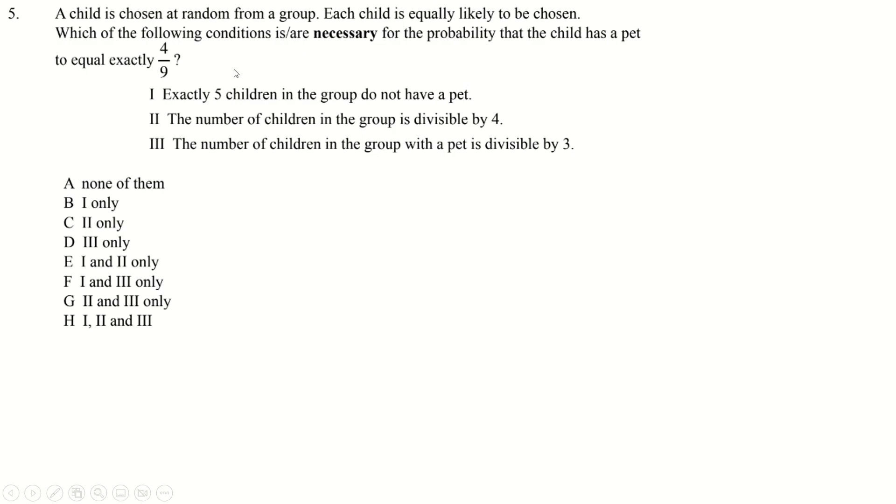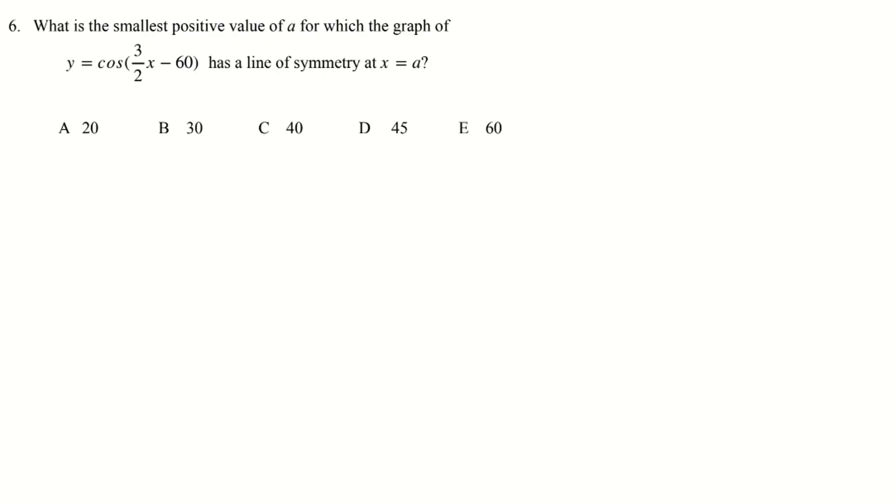Question five. Which of these are necessary for the probability of having a pet to be four ninths? Five children do not have a pet. Well, this could have been simplified from eight-eighteenths, so 10 don't, so that's not necessary. Number of children in a group divisible by four, well, clearly, there's a counterexample, for example here, the number of children in a group is nine, and number of children with a pet, again, divisible by three, no, could be four ninths. So, yeah, cool, none of them. Excellent.